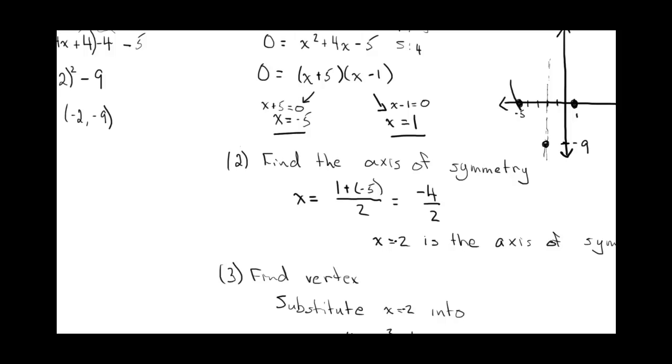And then we'll just connect those three points. Well, let's try to make it a little more symmetric than that. So there's our vertex. And we'll just label that y equals x squared plus four x minus five.